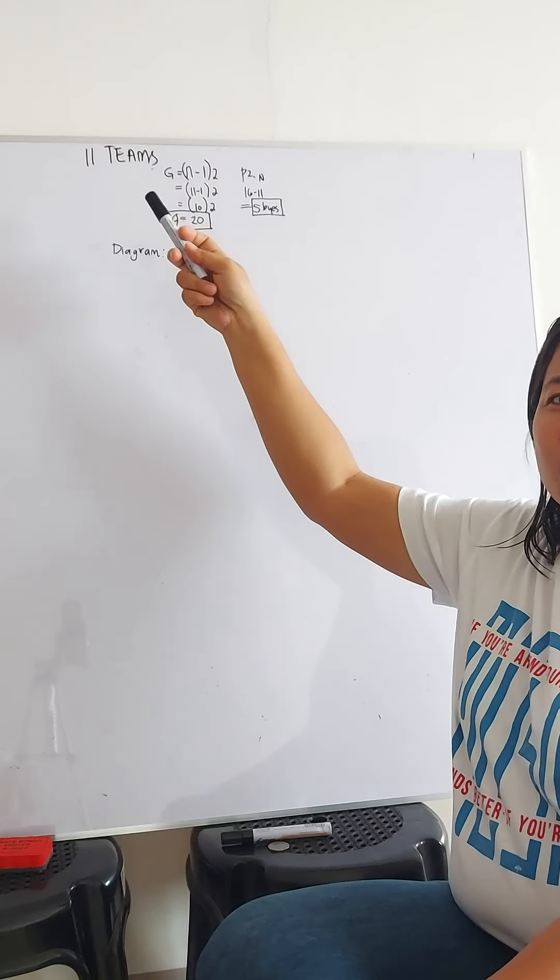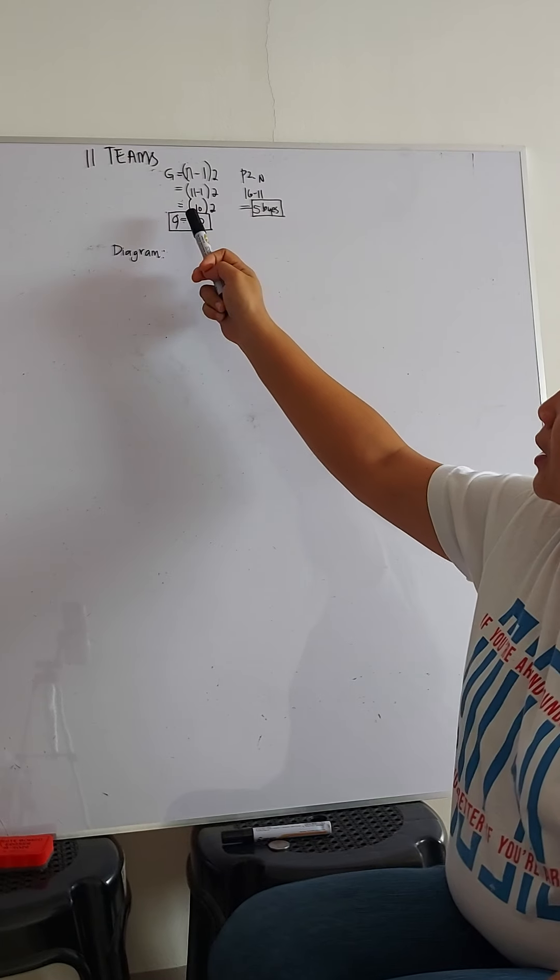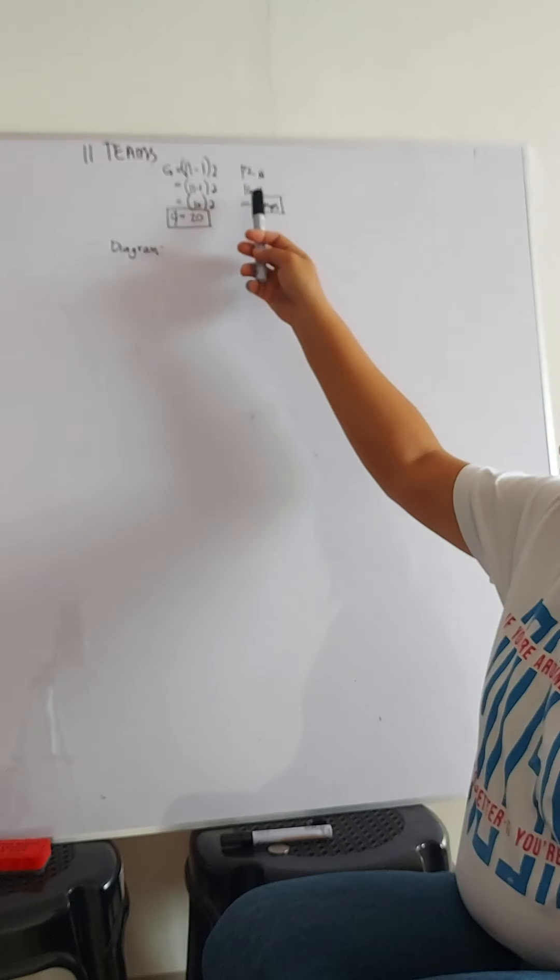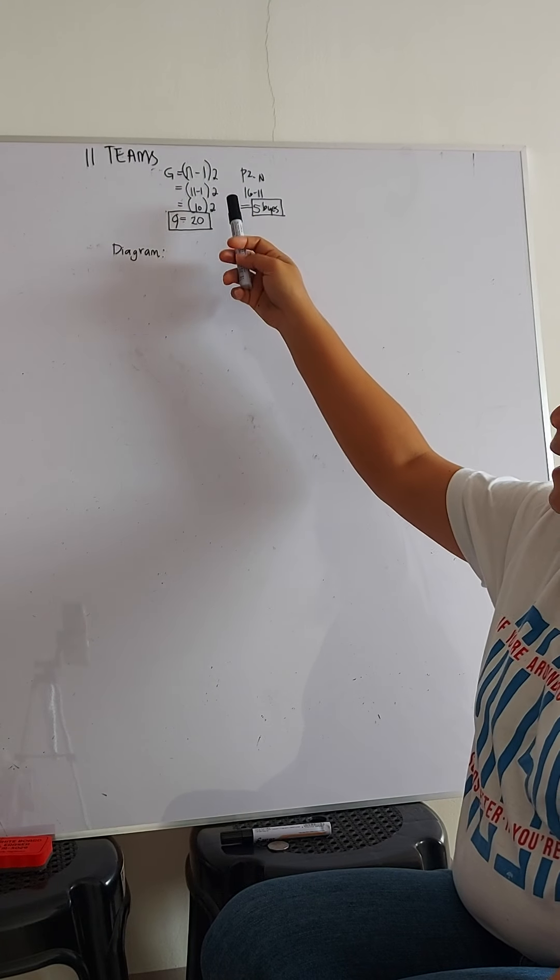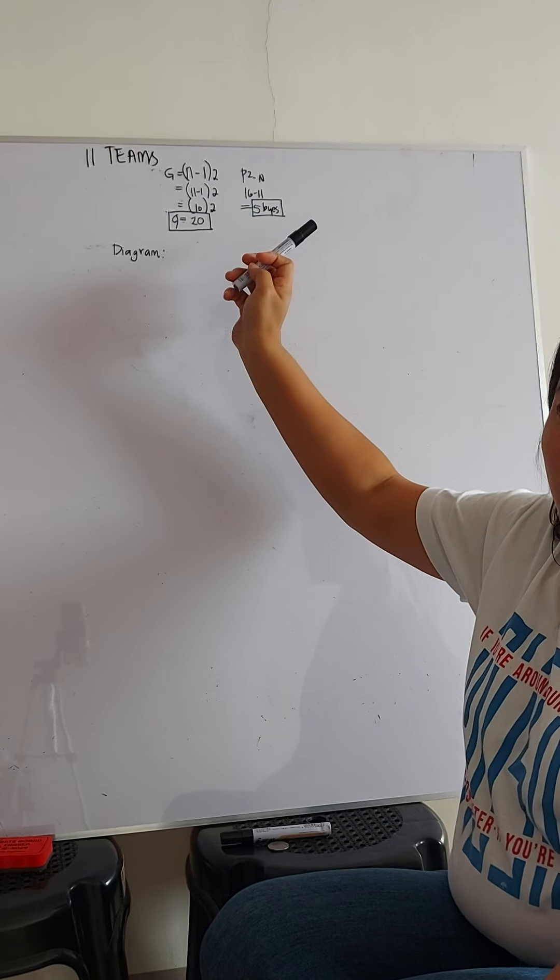G equals N minus 1 times 2, 11 minus 1 times 2, 10 times 2, then we have 20 games. Whereas, power of 2 minus N, 16 minus 11, equals to 5 byes.